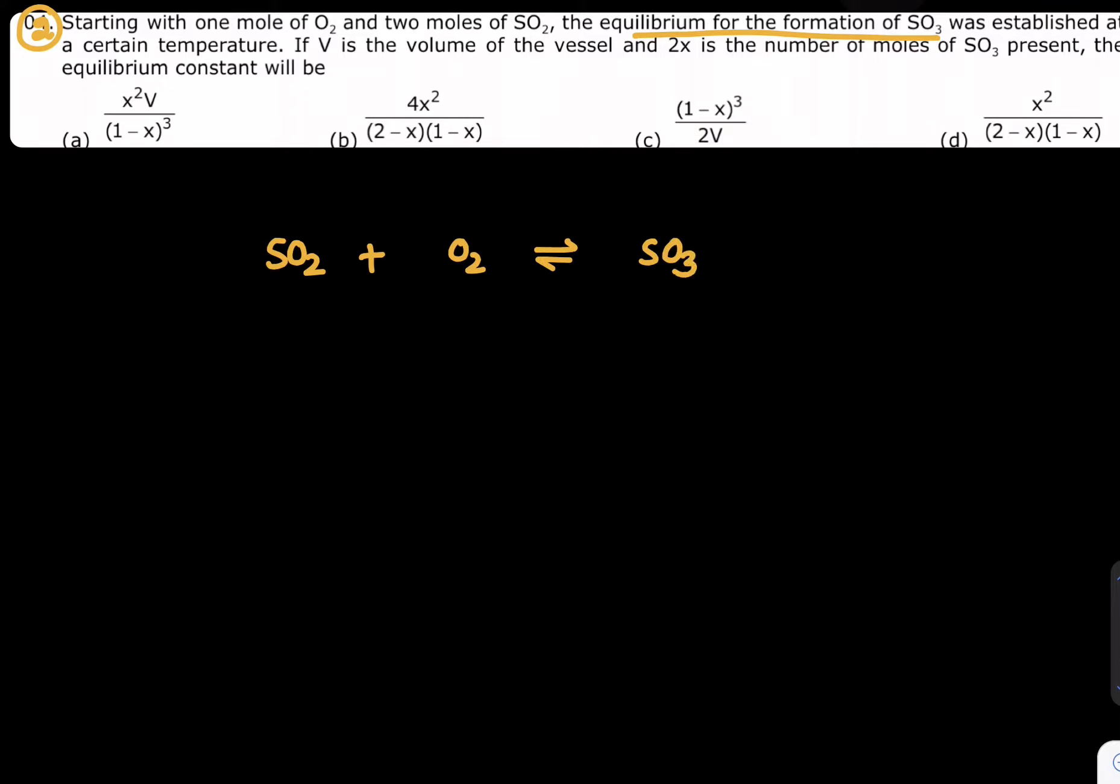You will write SO₂ + O₂ gives SO₃. The balanced equation is 2SO₂ + 1O₂ gives 2SO₃. V is the volume of the vessel and 2x is the number of moles of SO₃ present. When they are present, they are present at equilibrium, so this number is given as 2x. Initial moles given are 1 mole O₂ and 2 moles SO₂.